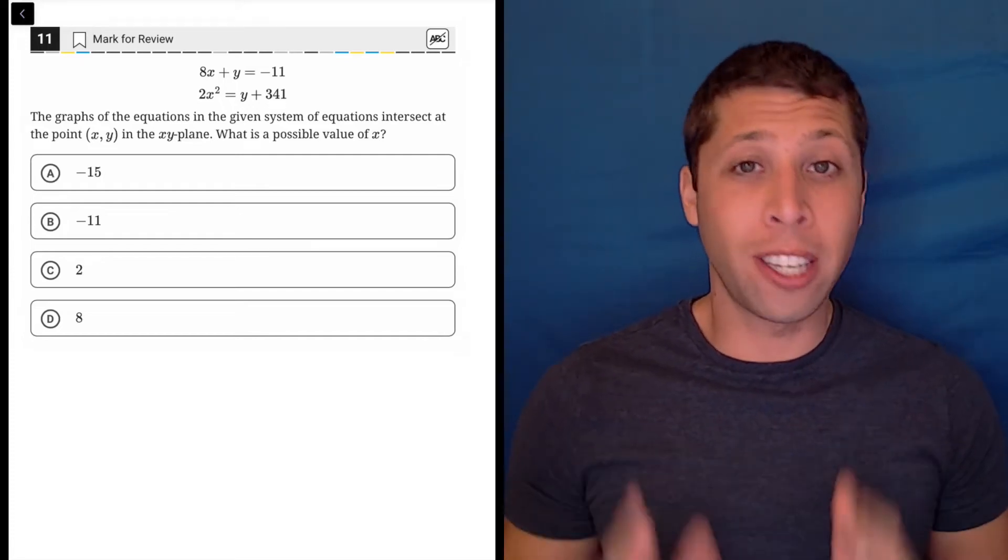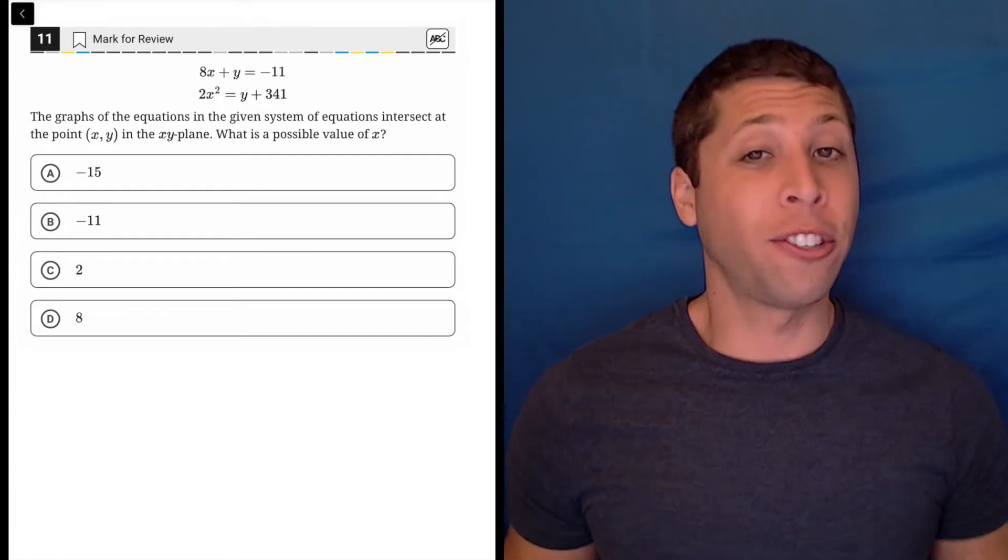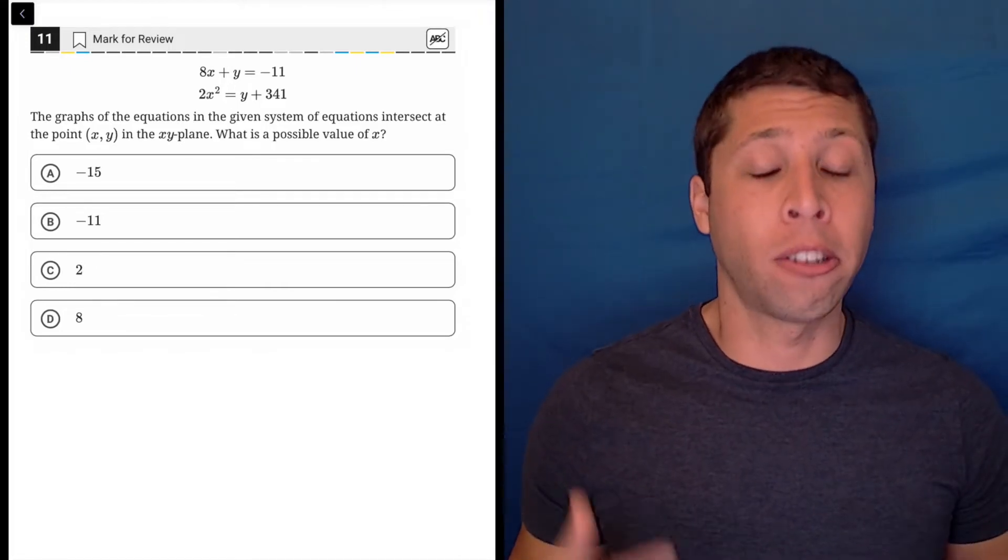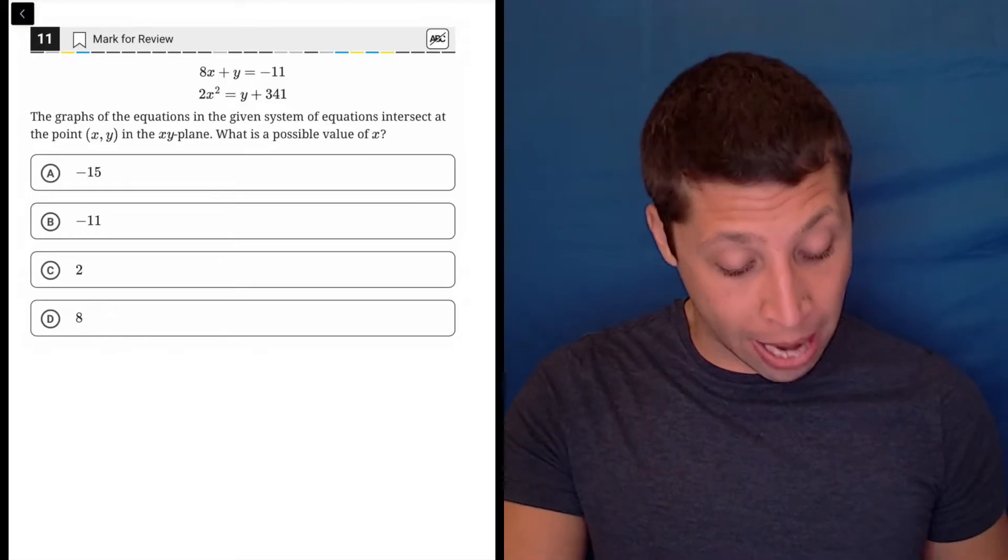On the new SAT, my first instinct for pretty much any point of intersection question is going to be graph it. Use the Desmos calculator that's built in and just enter these things and see what happens.